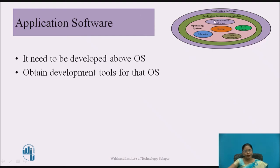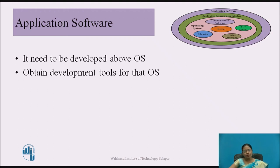This is the application software part. When I am using my mobile phone and using PhonePe or any other app like the Swachh Bharat app, I am using application software. Application software needs to be developed on top of the operating system. For example, if I have an Android phone, the app developed for it is different from a Windows phone app. So application software must be developed above the operating system, using the development tools for whichever OS is being used.